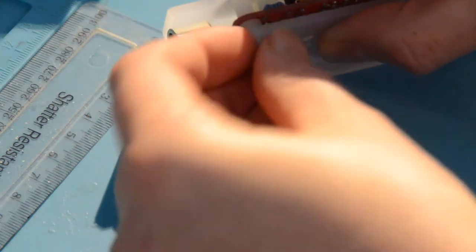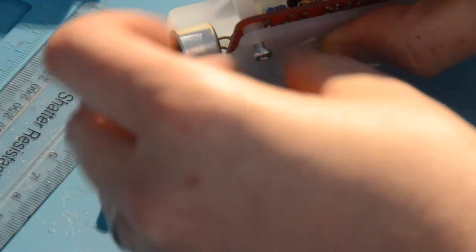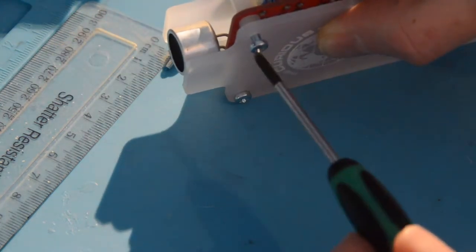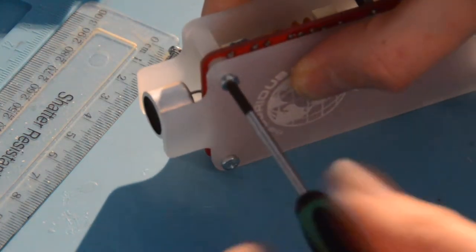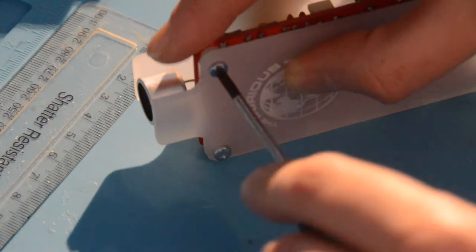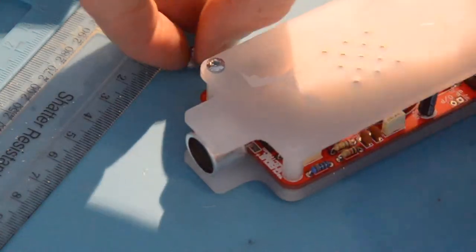A long screw on the bottom goes through the bottom, the spacer, and the PCB, and then reaches the thread in that hexagonal post. On top it just needs a short screw which goes through the top into the post.